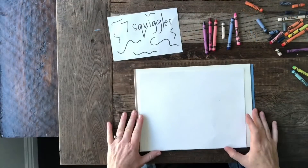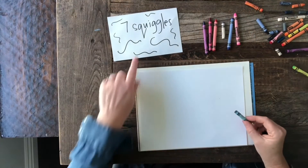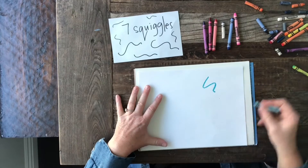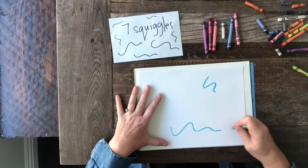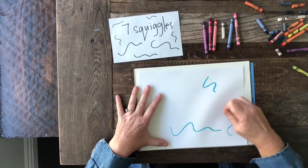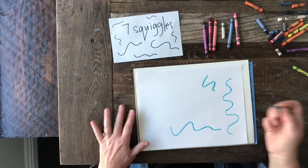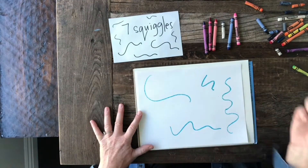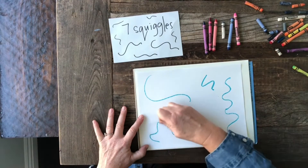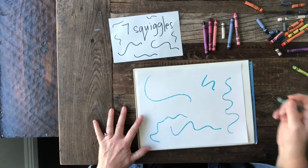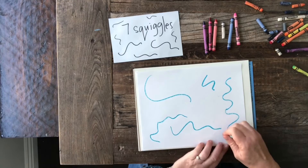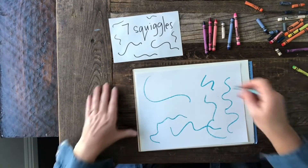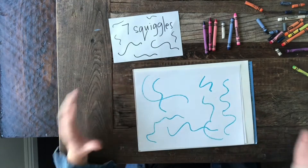The next thing to add is seven squiggles. One, two, three, four, five, six, and seven.